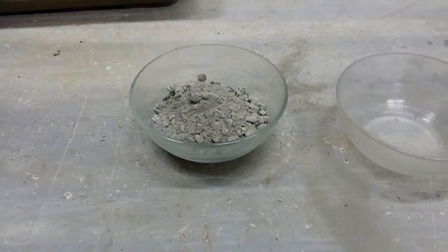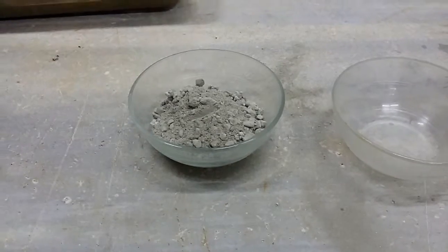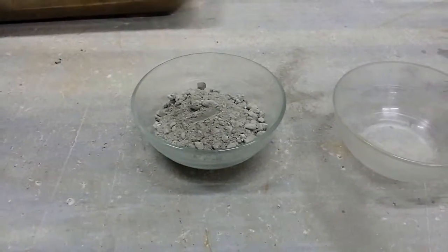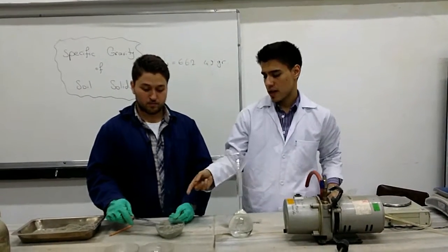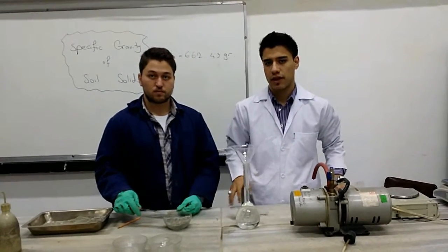After, we put approximately 100 grams of air-dried soil into an evaporating dish. The next step would be to transfer the soil into the volumetric flask.